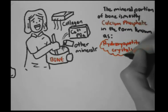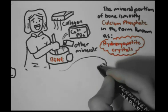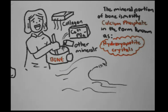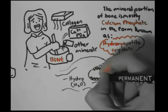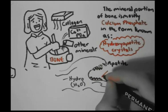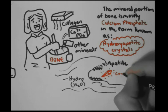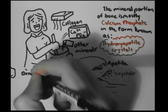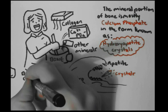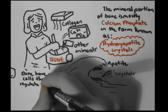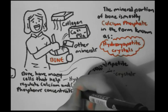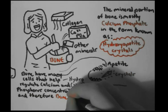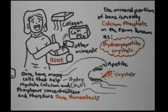A way of remembering the word hydroxyapatite: imagine a wave — 'hydro,' meaning water — that has an appetite for crystals: hydroxyapatite crystals. Bone has many cells that help regulate calcium and phosphorus concentrations and therefore bone homeostasis. We will look at these cells now.